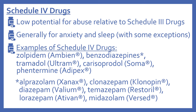Some other schedule four drugs include tramadol (Ultram), which is a pain medication; carisoprodol (Soma), which is a muscle relaxant; and phentermine (Adipex), which is an appetite suppressant for weight loss.